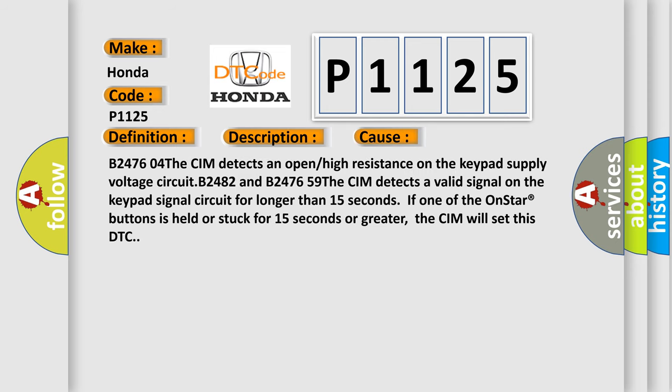B2476 04The CIM detects an open or high resistance on the keypad supply voltage circuit B2482 and B2476 59. The CIM detects a valid signal on the keypad signal circuit for longer than 15 seconds. If one of the OnStar buttons is held or stuck for 15 seconds or greater, the CIM will set this DTC.